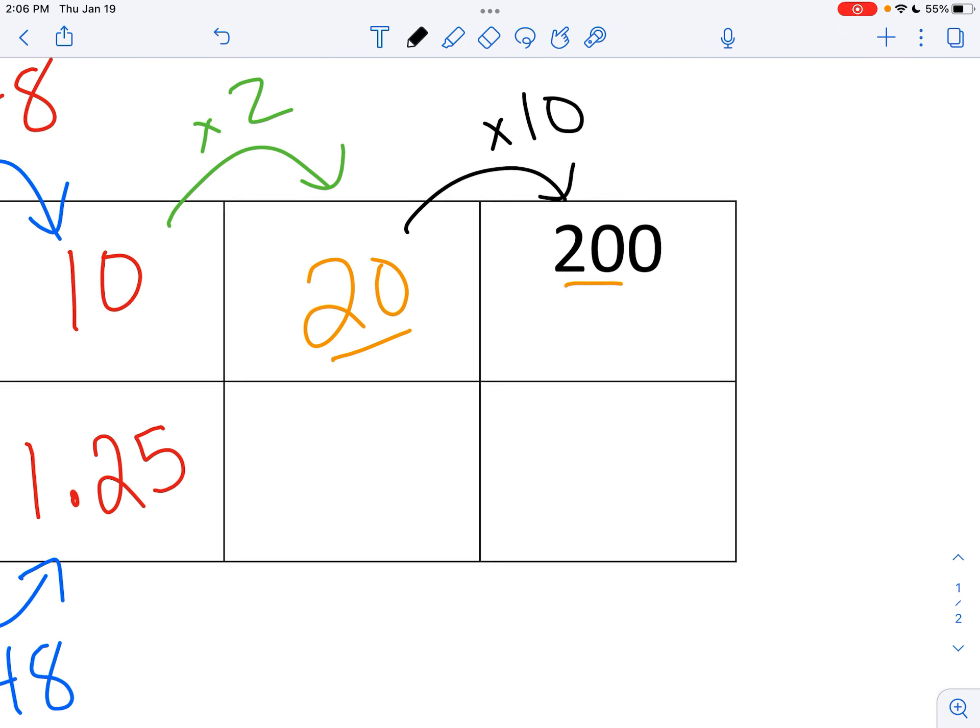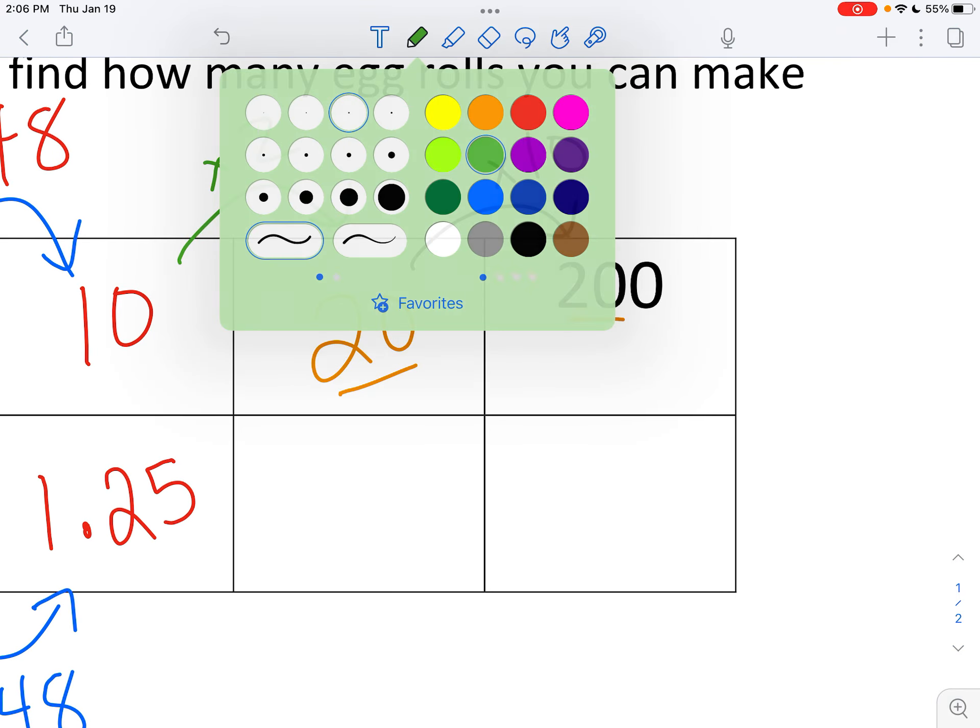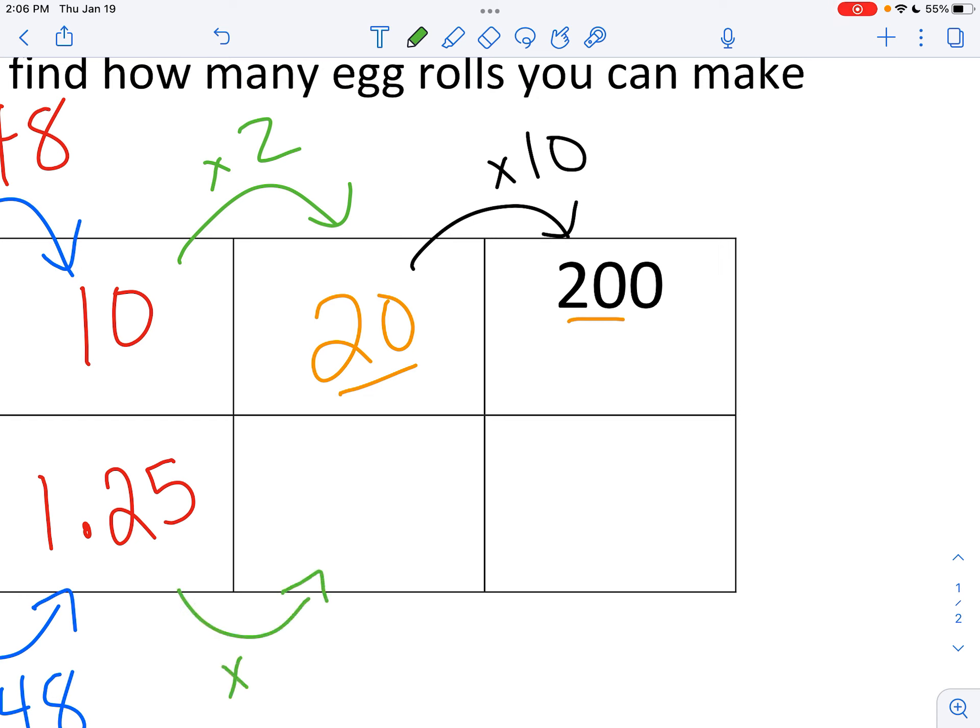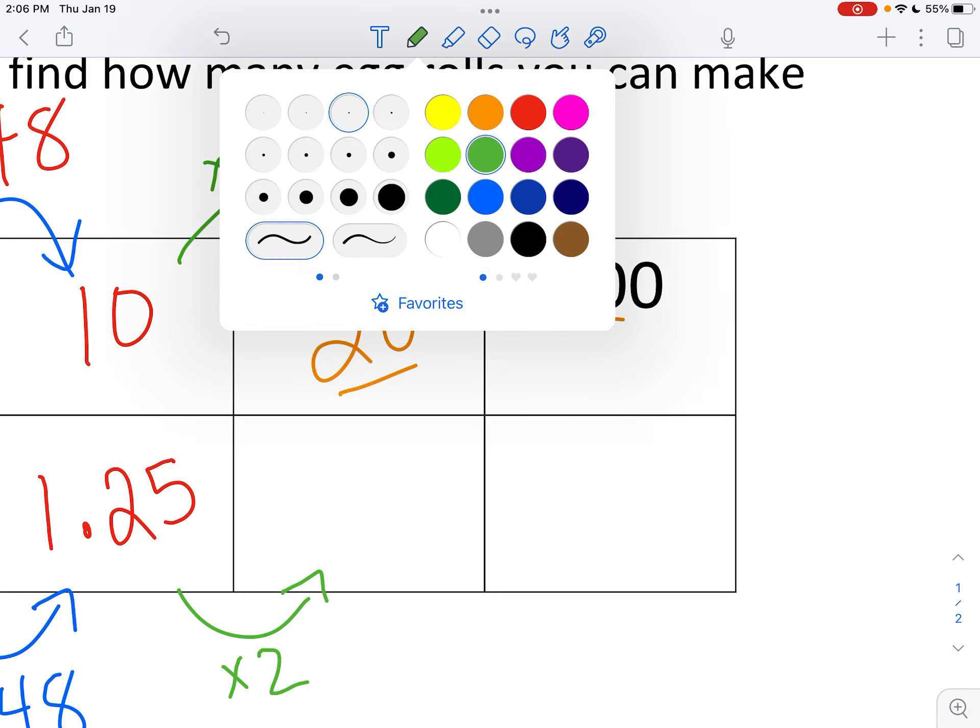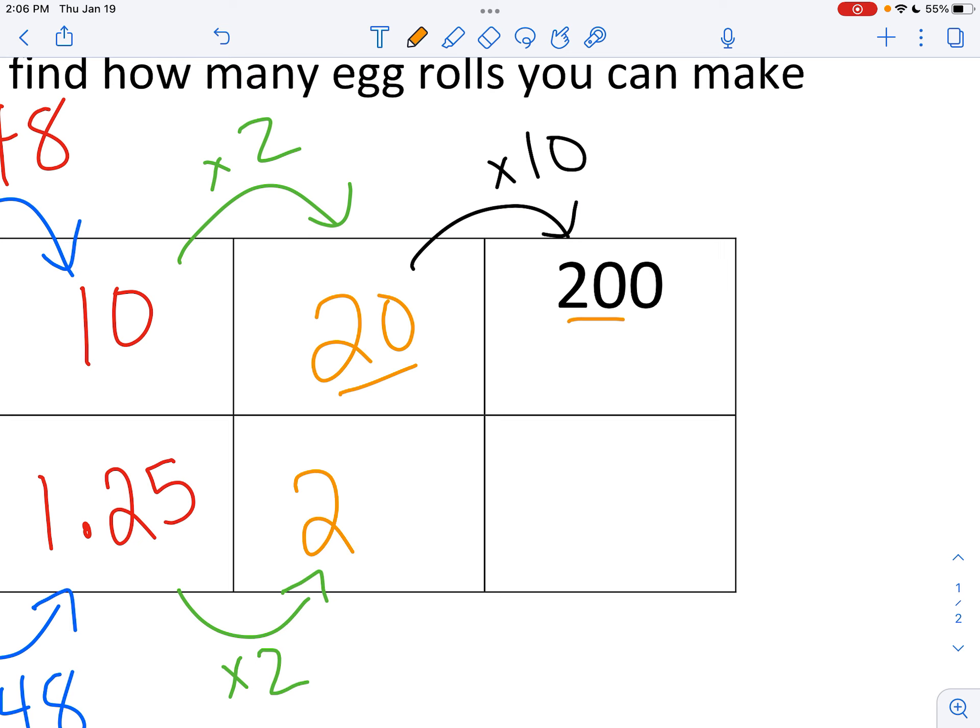So I'm going to copy those arrows on the top. First, I'm going to double the number of egg rolls. So in my calculator, that is 1 and 25 hundredths times 2. That gets me to 2 and 5 tenths, or 2 and a half. And then I'm going to match my arrow from on the top, times 10. So I'm going to need times 10 down below.